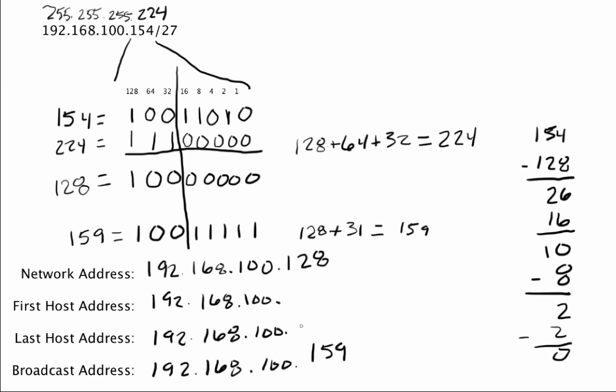Now we need to figure out the first and last host addresses. The first address is always right after the subnet address, so that would be 129. The last address is always the address right before the broadcast address, which is 158. The original host address 154 does fall within that range of 129 to 158. So 192.168.100.128 is the network address, 192.168.100.159 is the broadcast, and the first and last host is everything in between.